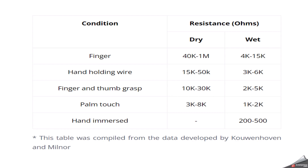Now we will consider some additional important factors. In a dry condition, the body's resistance will obviously be more. But when we are in a wet or sweaty condition, the skin resistance significantly reduces. For example, a finger in dry condition has 40k to 1 megaohm resistance, but in wet condition only 4k to 15k ohms. That is why people say you should not work with electrical wires when you are wet or sweaty. This table was developed by Hohenhoven and Milner — it shows resistance values for hand holding wire, palm touch, and finger and thumb grip in both dry and wet conditions.